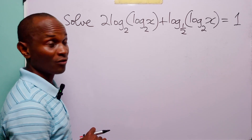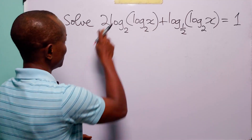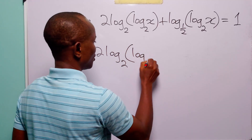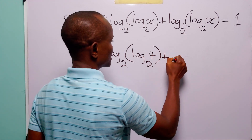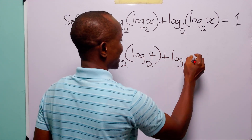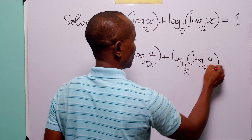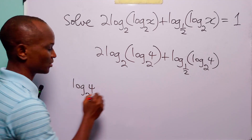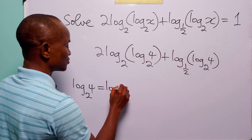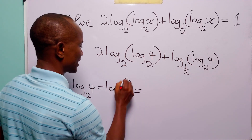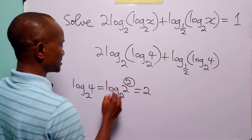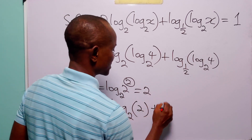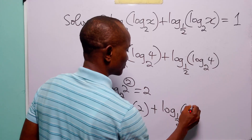To check our answer, let us substitute 4 for x into the original equation. So we have 2 times log base 2 of log base 2 of 4, plus log base one-half of log base 2 of 4. Remember that log base 2 of 4 is equal to log base 2 of 2 squared, which is equal to 2. So this becomes 2 times log base 2 of 2, plus log base one-half of 2.